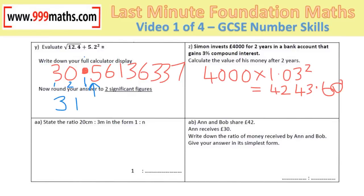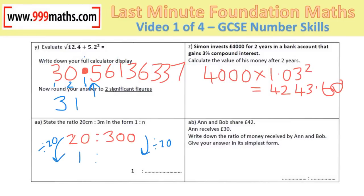Simplifying the ratio 20 centimetres to 3 metres: convert 3 metres to 300 centimetres. Divide 20 by 20 to get 1, so divide 300 by 20 as well, giving 15. The answer is 1 to 15.